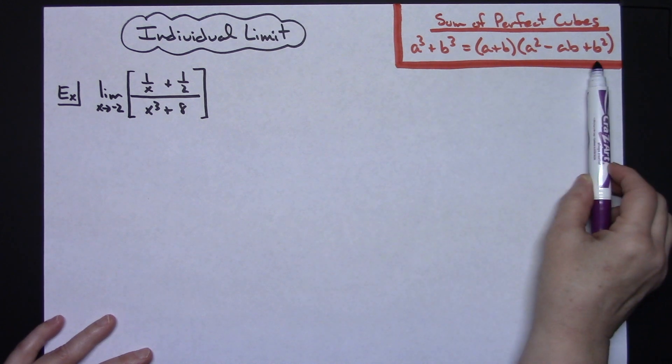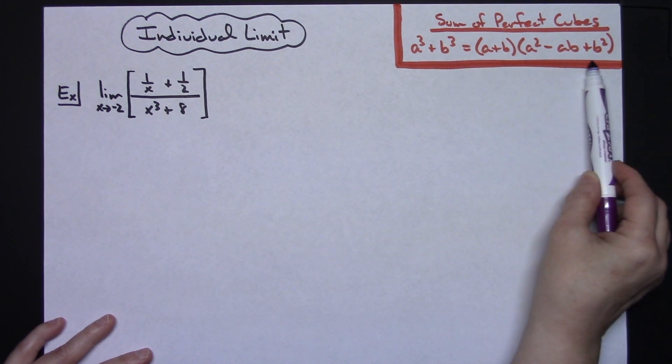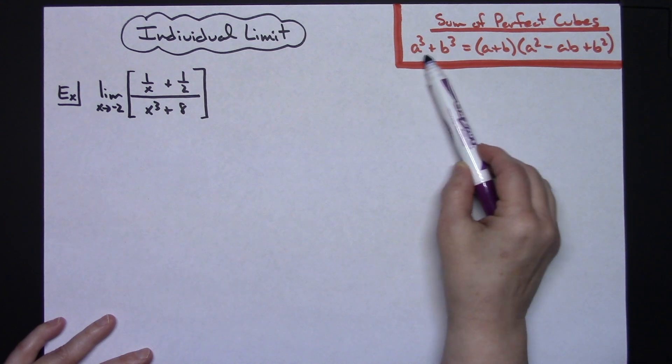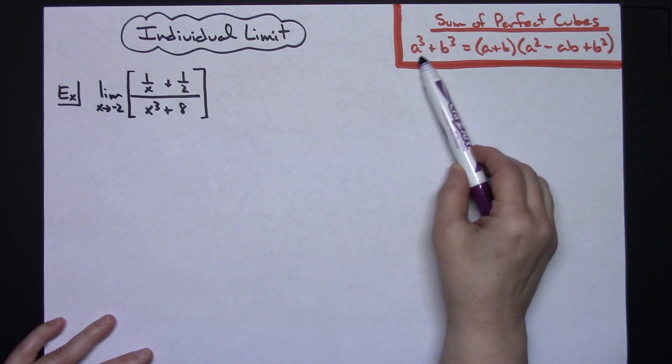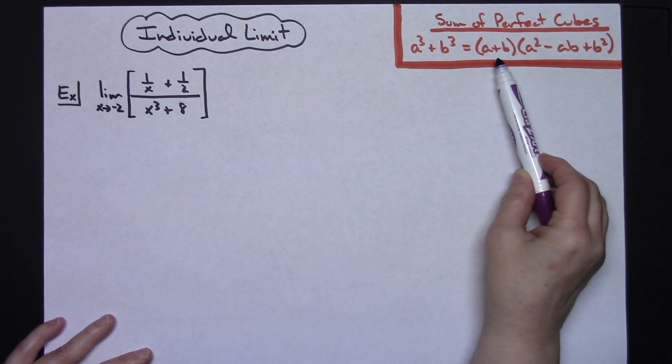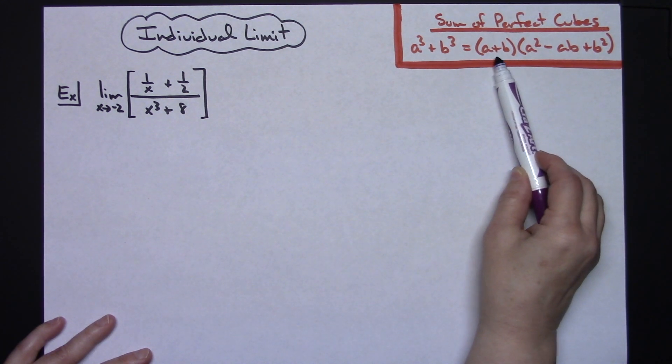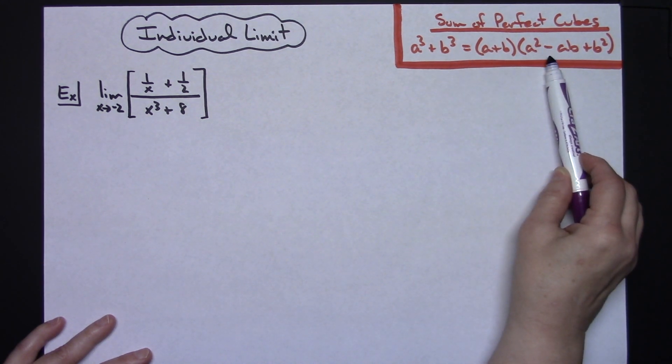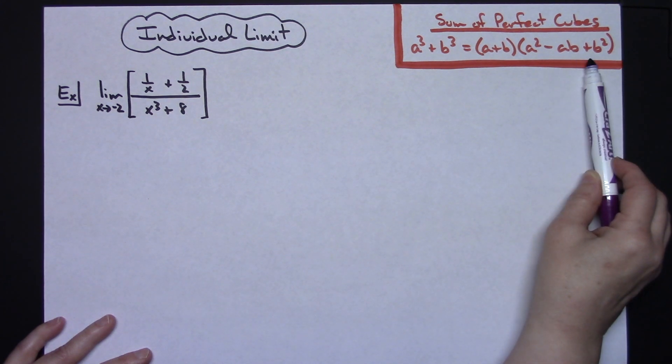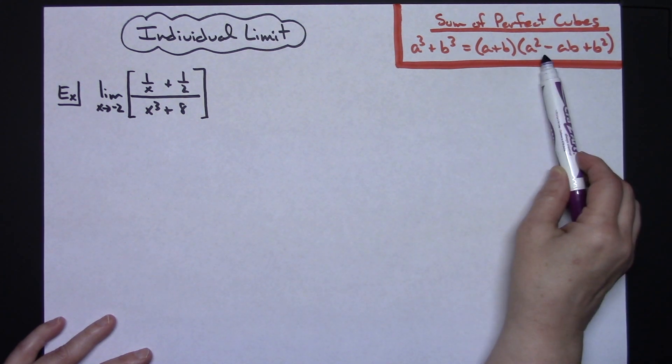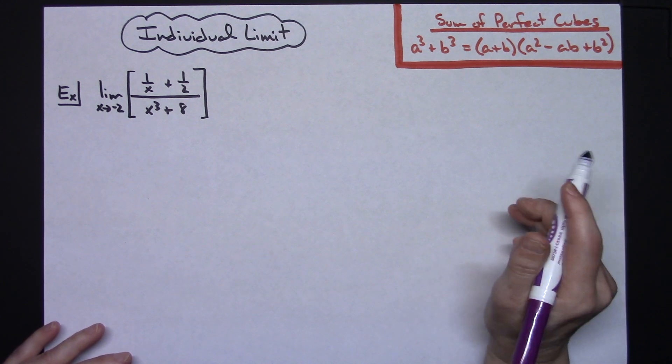My students usually refer to this as SOAP because that helps them remember their signs. If this is your original sum of the perfect cubes, it's a plus, then the SOAP acronym gives you your signs: same sign, opposite sign, and then always positive on the last one.